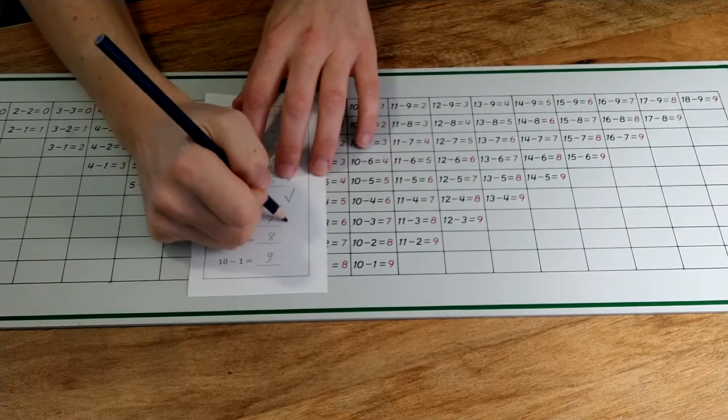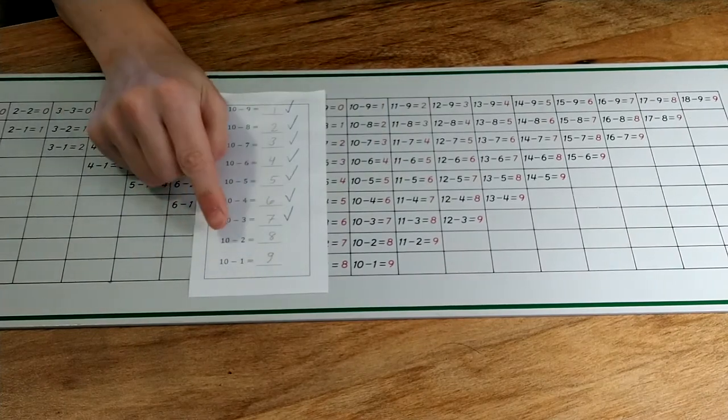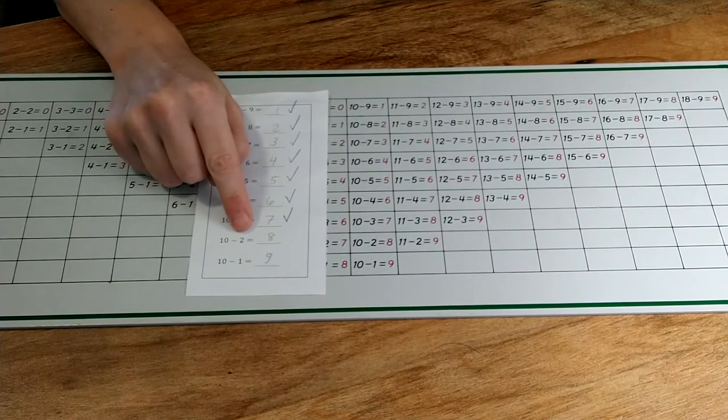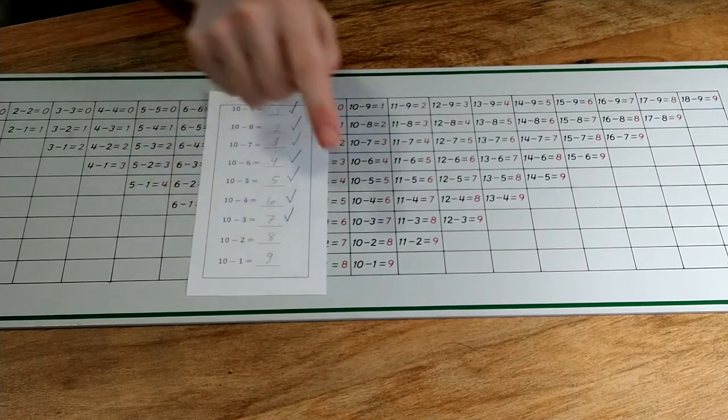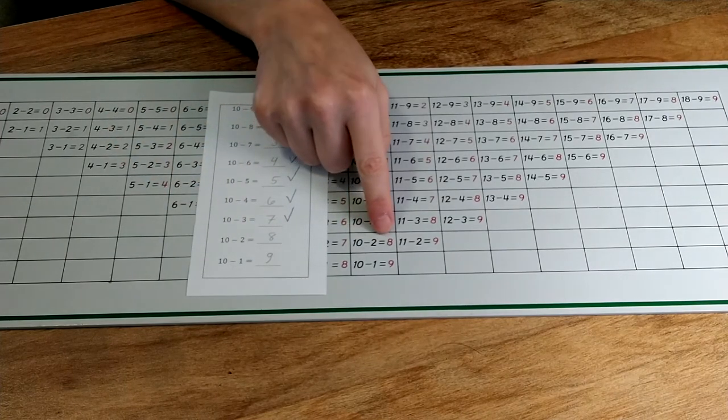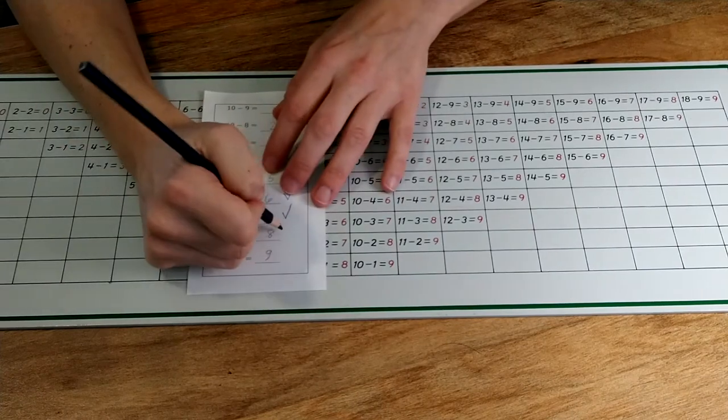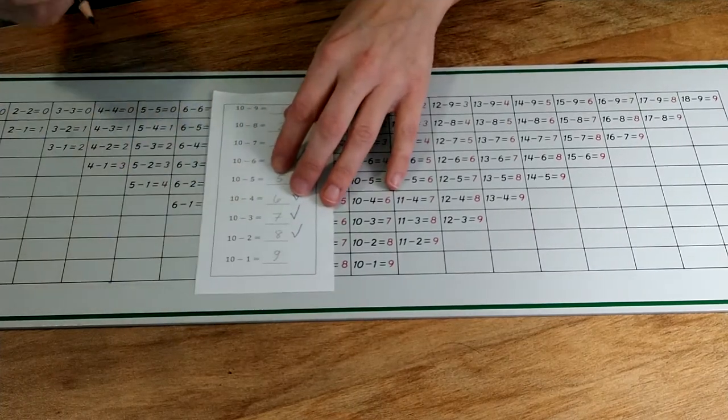Ten minus two equals eight. Ten minus two equals eight. They're all matching. It looks like I was using the strip board in the right way because I got the right answers. Let's check the last one.